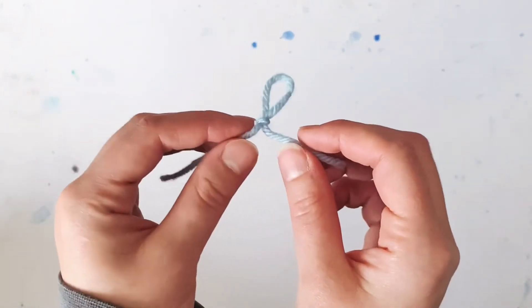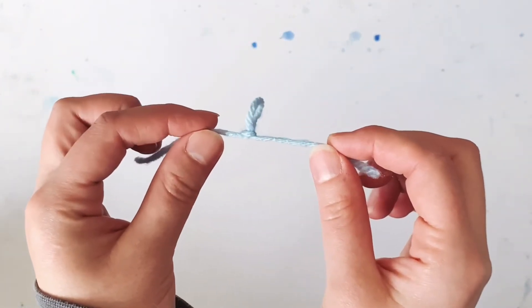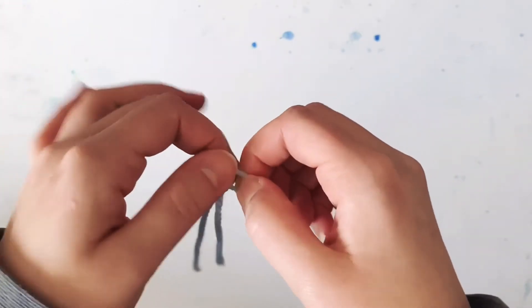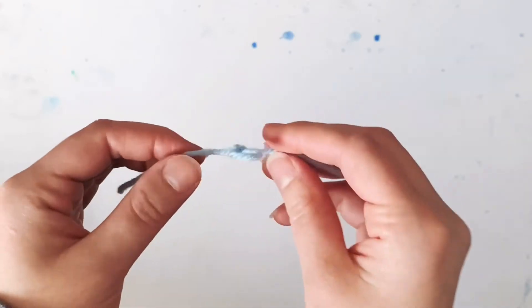The nice thing about slip knots is that they are adjustable. That means if I pull, I can make the loop smaller. If I pull the loop, I can make it bigger, and in fact I can make it completely disappear altogether.